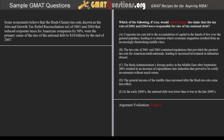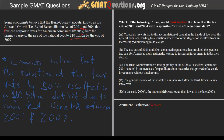So let's go ahead and re-read the passage and determine what logic is at work here. Economists believe that the Bush-Cheney tax cuts, which are the same thing as the Jobs and Growth Tax Relief Reconciliation Act, caused a $10 trillion deficit due to the fact that the tax cuts reduced corporate taxes for American companies. What it's claiming is that the tax cuts were responsible for the national deficit based on the funds that were lost due to a 50% reduction in the tax rate. Taken together, economists believe that the reduction of the tax rate by 50% resulted in a $10 trillion deficit due to funds that were lost between 2001 and 2007.